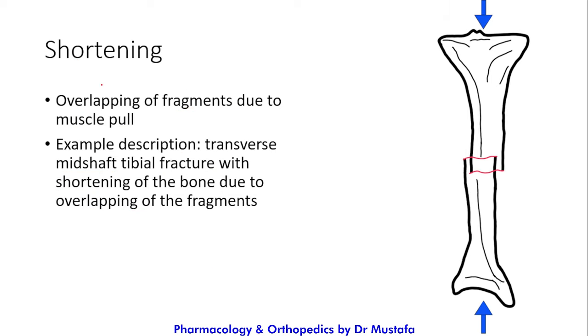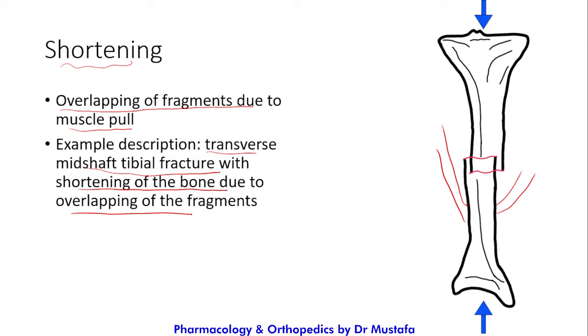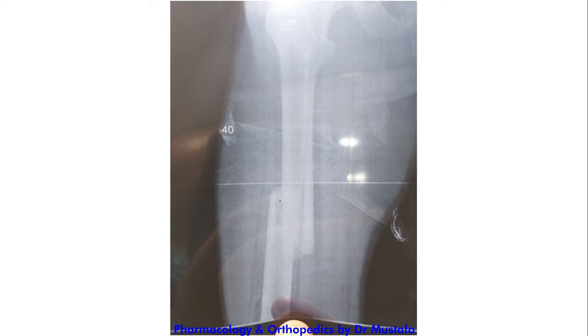The fourth type of displacement is shortening, where there is overlapping of the fragments due to muscle pull or the fracturing force. Muscles insert on the distal fragment and pull it into the other fragment, causing overlap. It is described as: 'transverse mid-shaft tibial fracture with shortening of the bone due to overlapping of the fragments.' Here we also have an example of a femoral fracture — transverse mid-shaft femoral fracture with shortening of the femur bone.